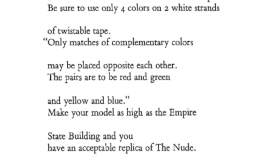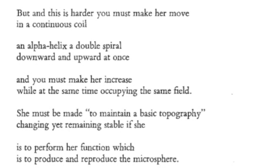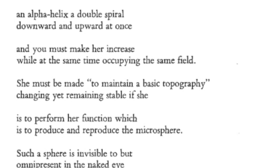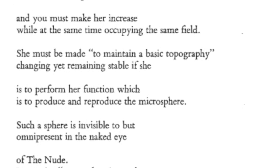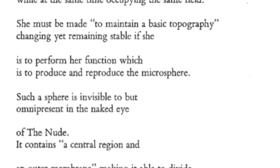Make your model as high as the Empire State Building and you have an acceptable replica of the nude. But — and this is harder — you must make her move in a continuous coil, an alpha helix, a double spiral downward and upward at once. You must make her increase while at the same time occupying the same field. She must maintain a basic topography: changing yet remaining stable, if she is to perform her function, which is to produce and reproduce the microsphere.